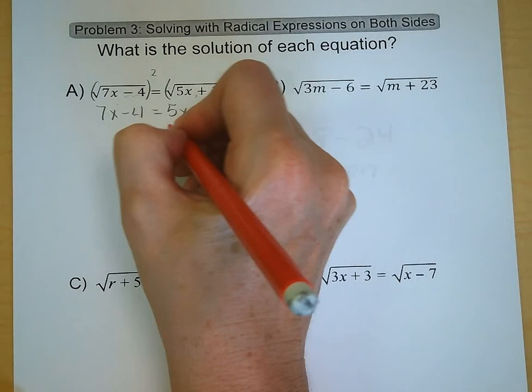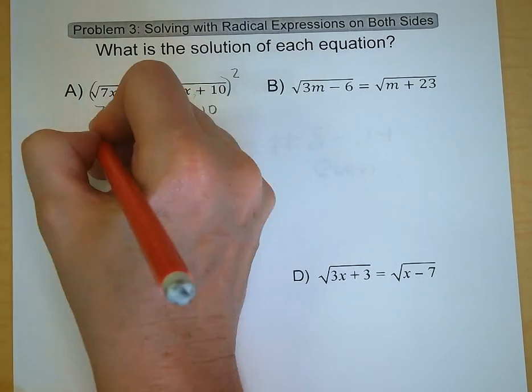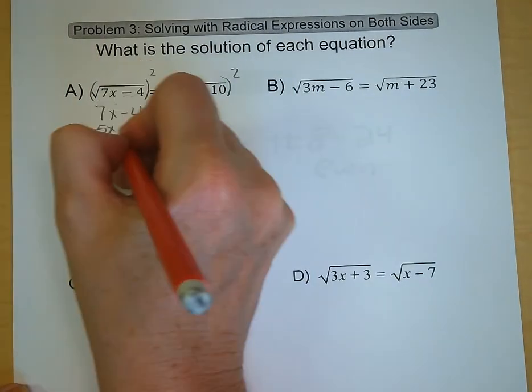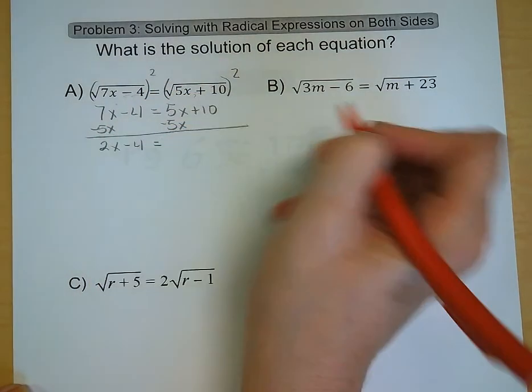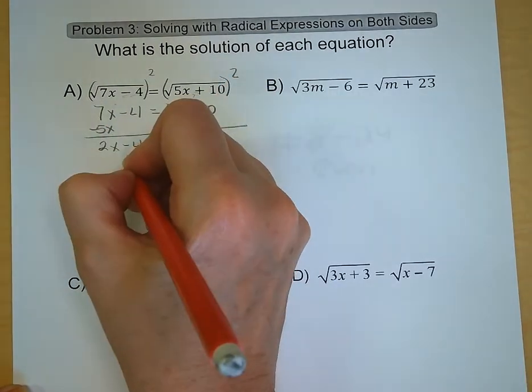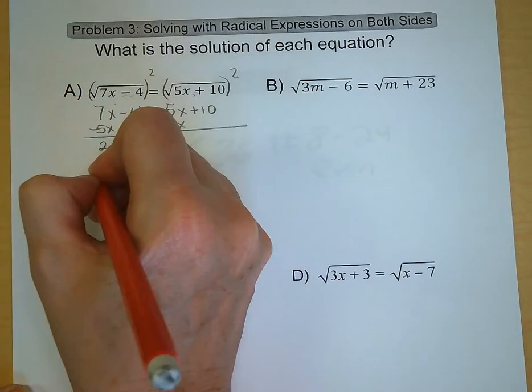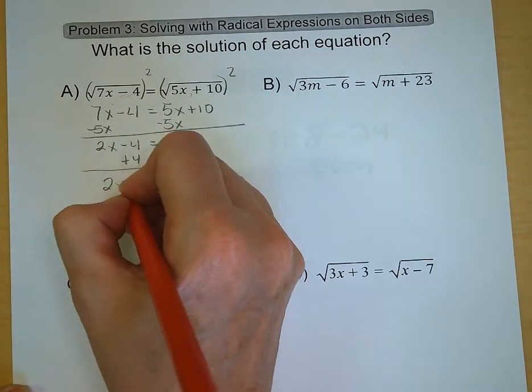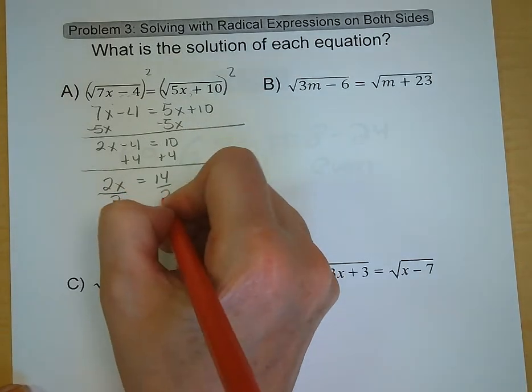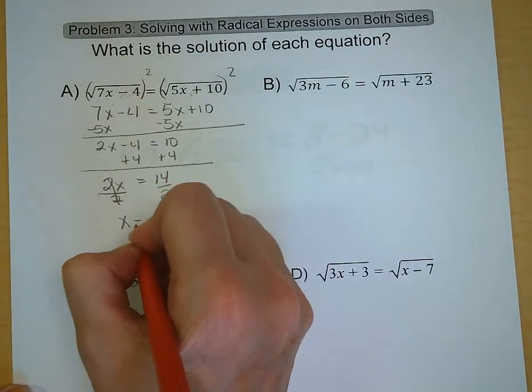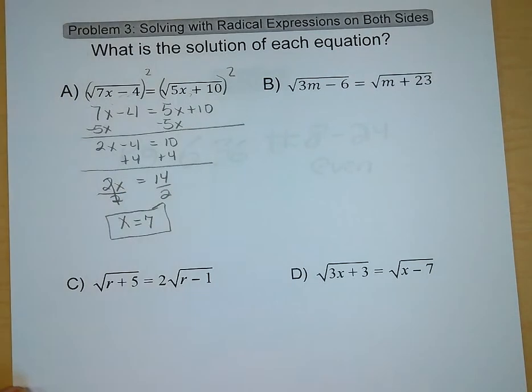Hey, this looks an awful lot like chapter 2. So we subtract 5x from both sides of the equation. We're moving our variables over to the left where you have 2x minus 4 is equal to 10. Add 4 to both sides. 2x is equal to 14. Divided by 2, x equals 7. Nice and easy.